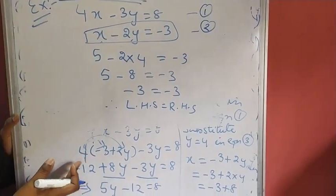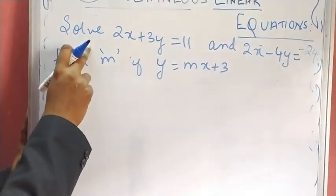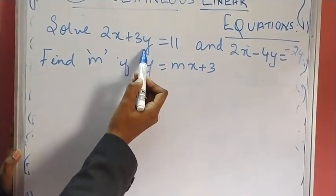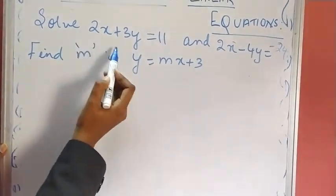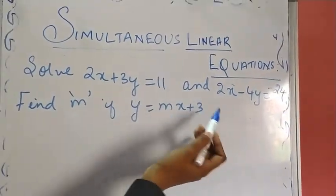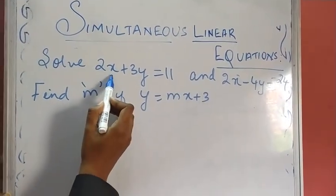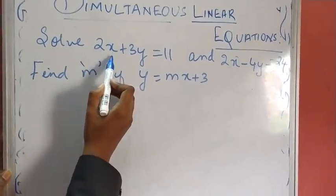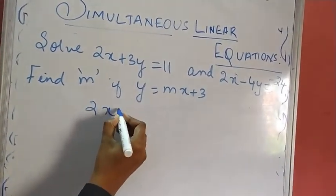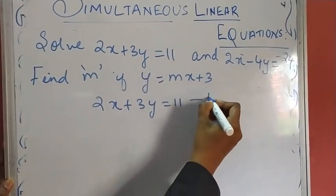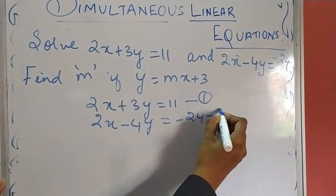Let me give you another example to make you understand better. The question says: solve 2X plus 3Y equals 11 and 2X minus 4Y equals minus 24. Here 'solve' means find the values of X and Y. Additionally, find M if Y equals MX plus 3 — we will substitute our found X and Y values to find M. Let us label 2X plus 3Y equals 11 as equation 1 and 2X minus 4Y equals minus 24 as equation 2.